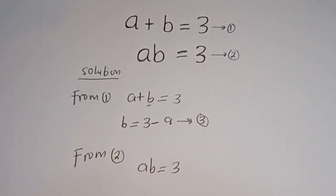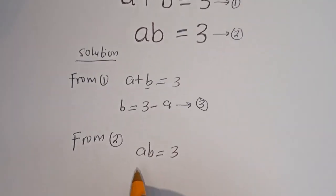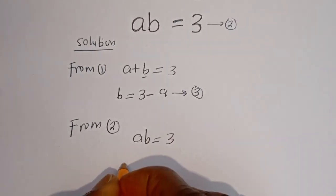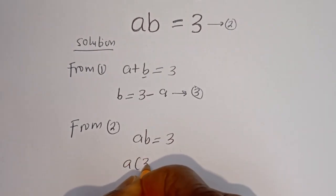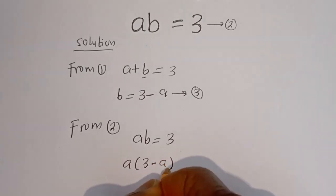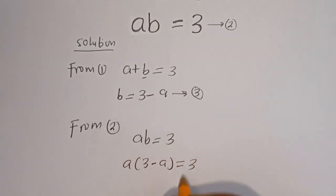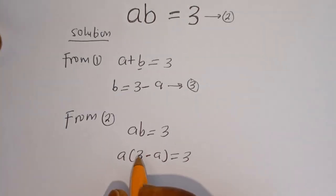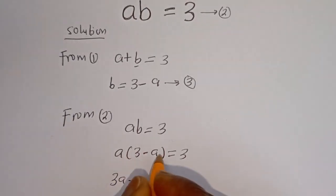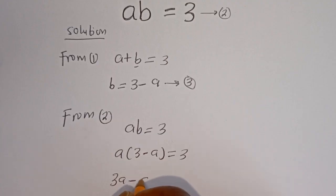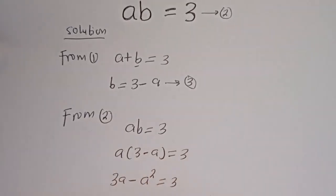We can now substitute for B. Then we have A times (3 minus A) is equal to 3. Let's open this bracket: A multiplied by 3 gives 3A, minus A multiplied by A gives A squared, so 3A minus A squared is equal to 3.